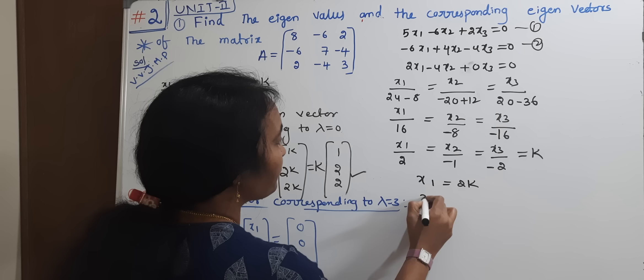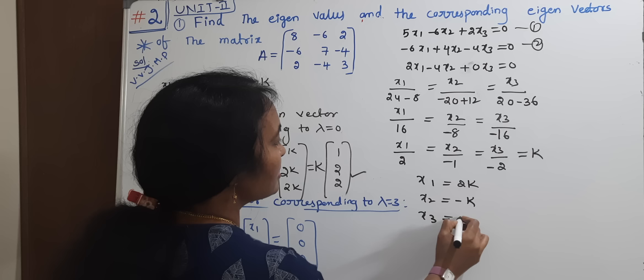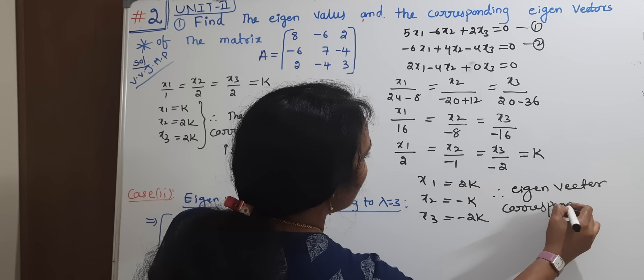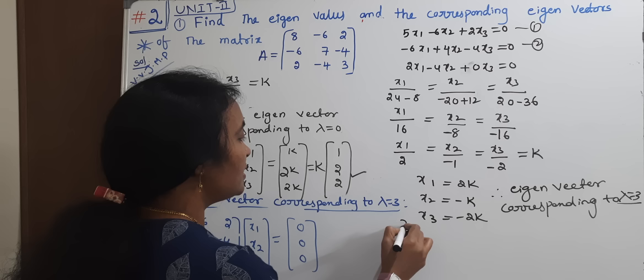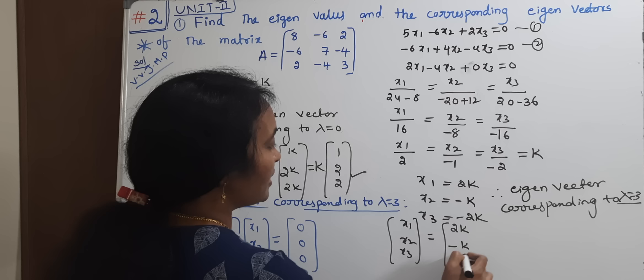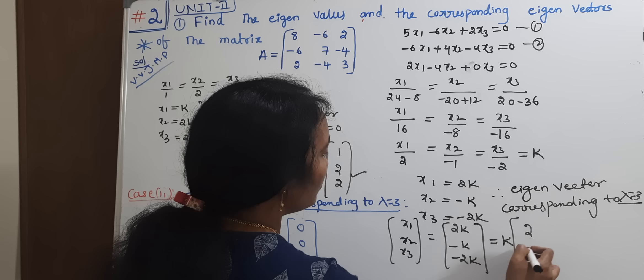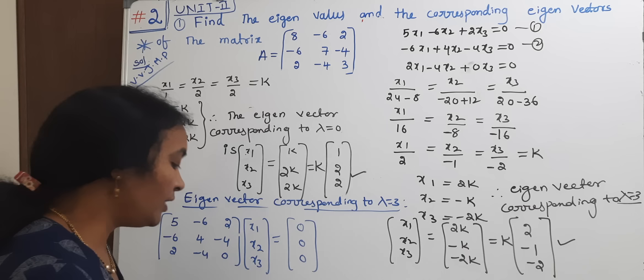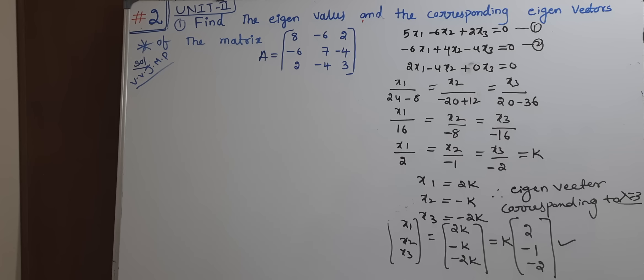Simplifying: x1 by 16, x2 by minus 8, x3 by minus 16. Dividing by 8: x1 by 2 equals x2 by minus 1 equals x3 by minus 2 equals k. So x1 equals 2k, x2 equals minus k, x3 equals minus 2k. Taking k common, the eigenvector corresponding to lambda equal to 3 is [2, minus 1, minus 2].